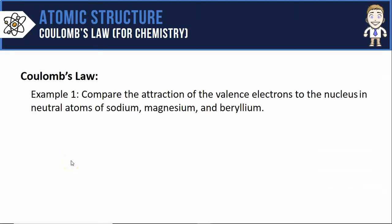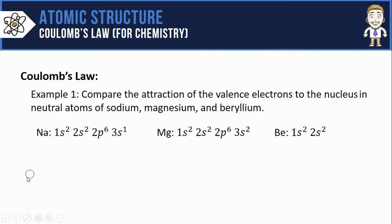So let's close the video with an example where we compare the attraction of the valence outermost electrons to the nucleus in sodium, magnesium, and beryllium atoms. Let's first get a look at where those valence electrons are by writing configurations for sodium, magnesium, and beryllium.